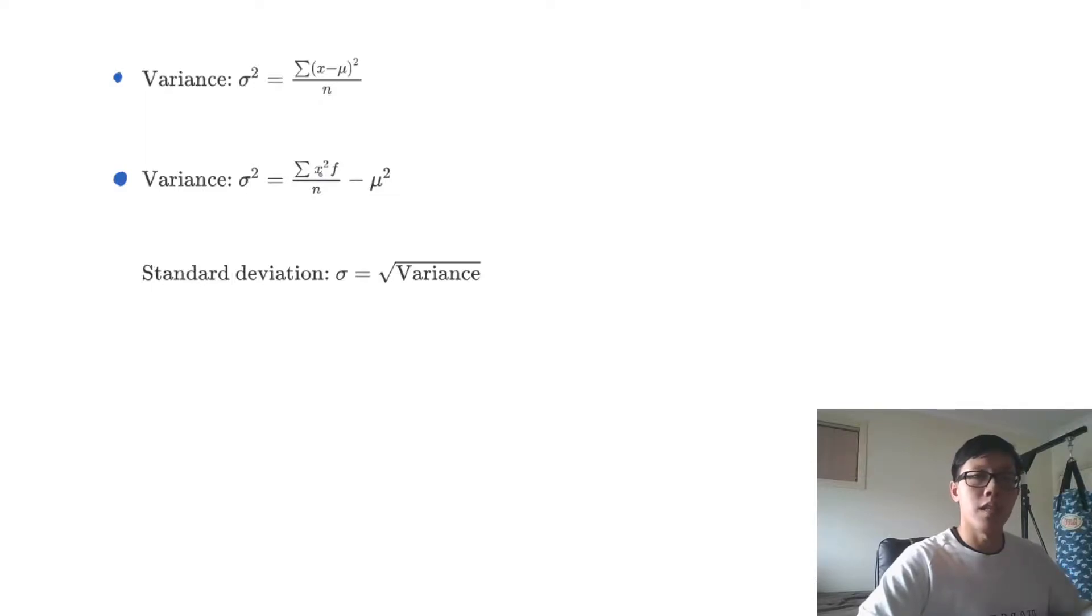we multiply it by the frequency, how many times it occurs, we divide by the total number of data points and then we take away the mean squared.